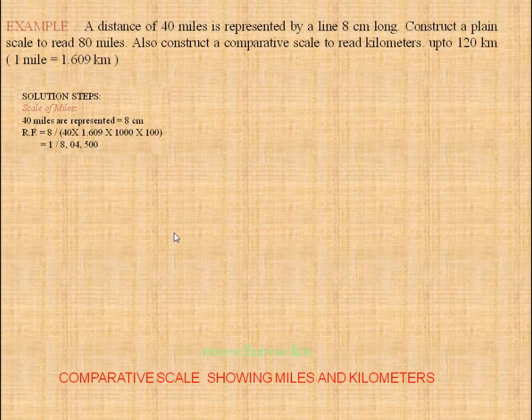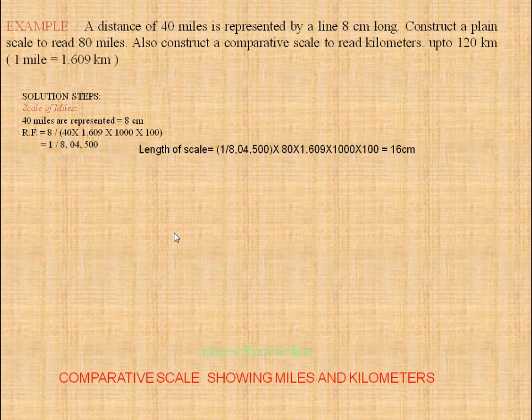From this we have to find the length of scale. Length of scale equals RF into maximum length. The maximum length given is 80 miles, which we also convert into centimeters. So length of scale = (1/84,500) × 80 × 1.609 × 1000 × 100. We get 16 cm.